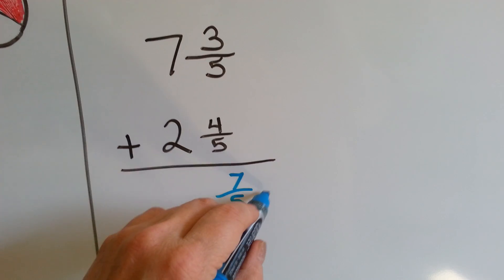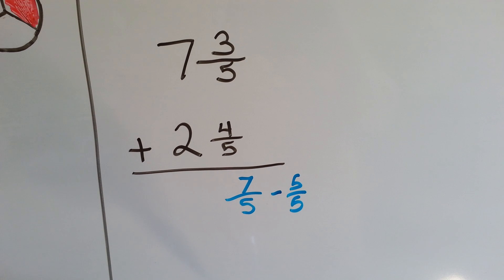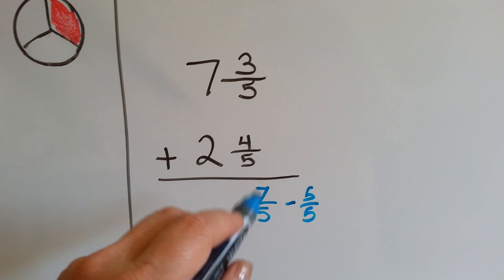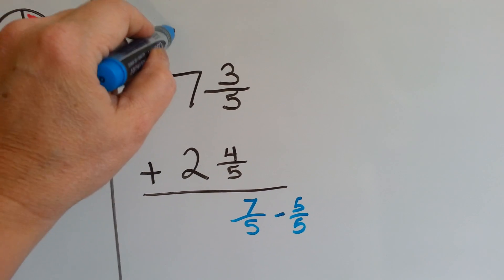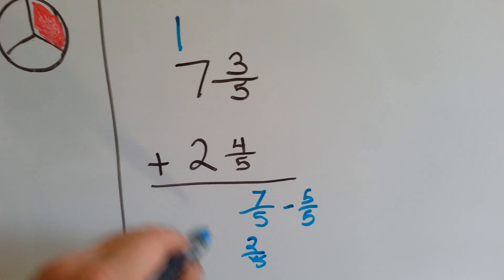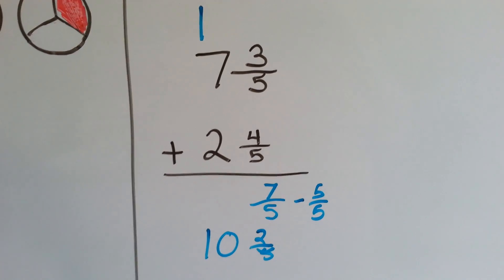And then what would that leave? That would leave 2/5, right? So, we can either regroup this 5/5 to this side right now as one whole, and make this 2/5, and then add 7 plus 1 is 8, 9, 10, and get 10 and 2/5.